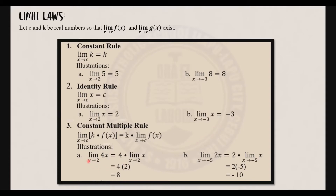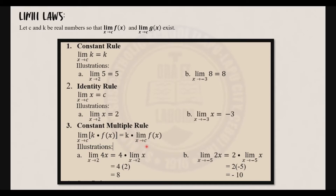Third, we have the constant multiple rule. It states that the limit of k times f of x as x approaches c is equal to k times the limit of f of x as x approaches c. For example, find the limit of 4x as x approaches 2. We apply the identity rule, so the limit of x as x approaches 2 is 2. So we have 4 times 2, which is 8.